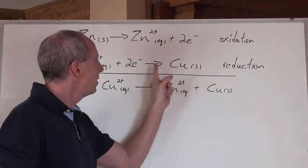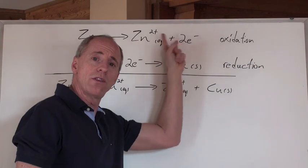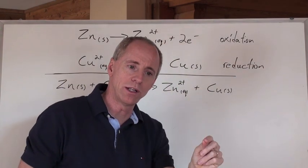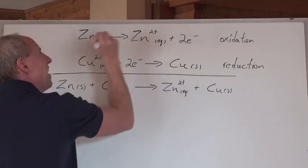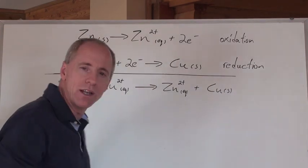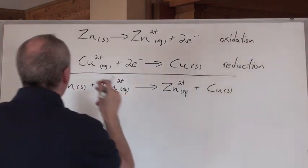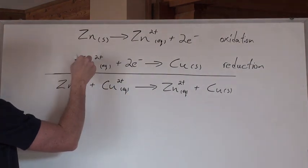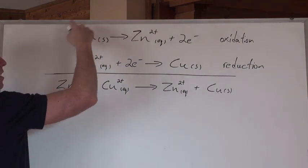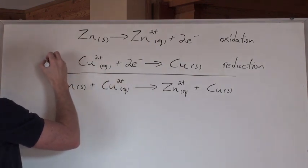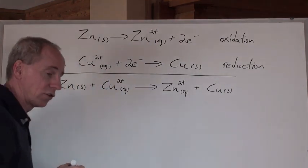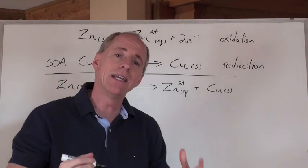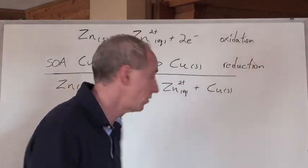Now again, what does this reaction want this one to do? It wants it to lose electrons. This copper ion right here is the agent by which this becomes oxidized. And so, we call the copper two ions here, in this setup, the strongest or just the oxidizing agent. Sometimes we write SOA for the strongest oxidizing agent in a group of chemicals.